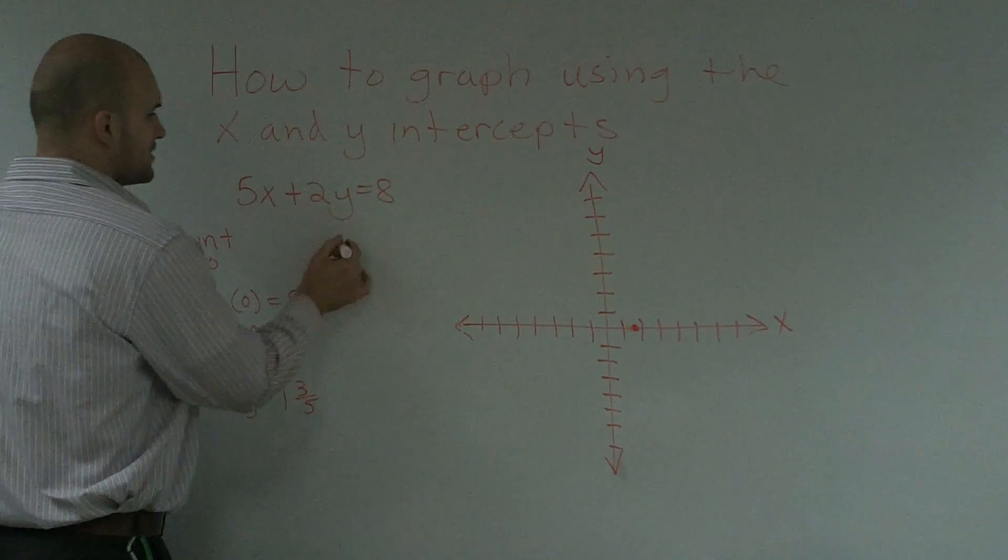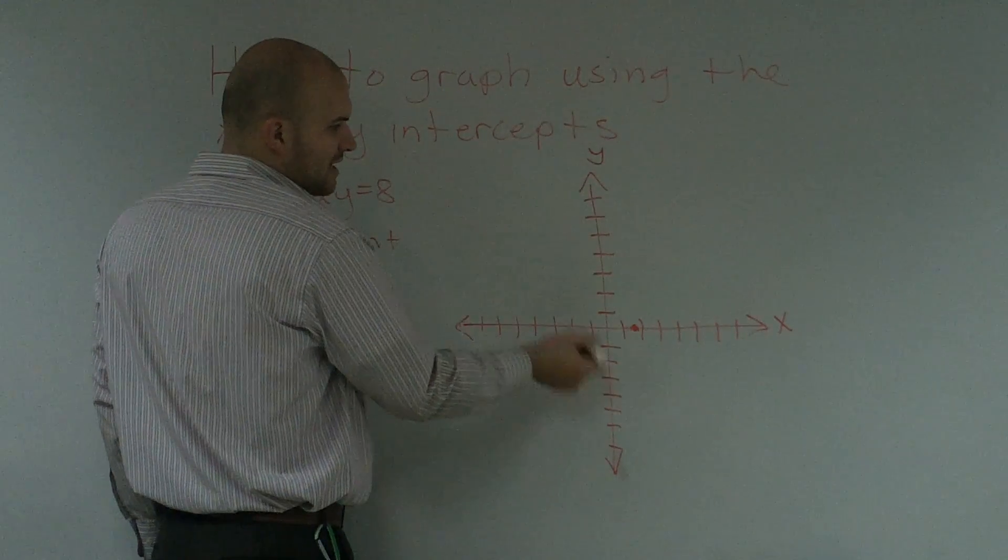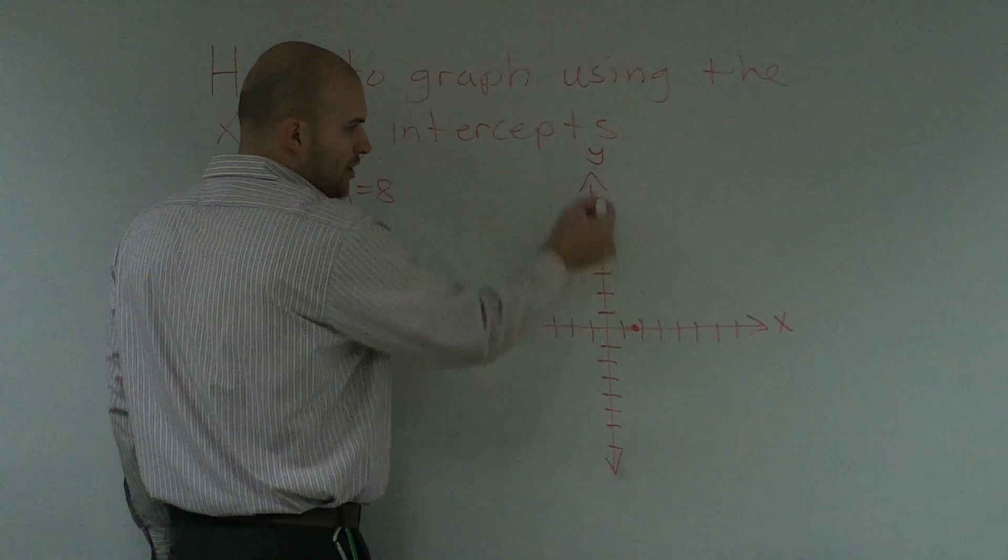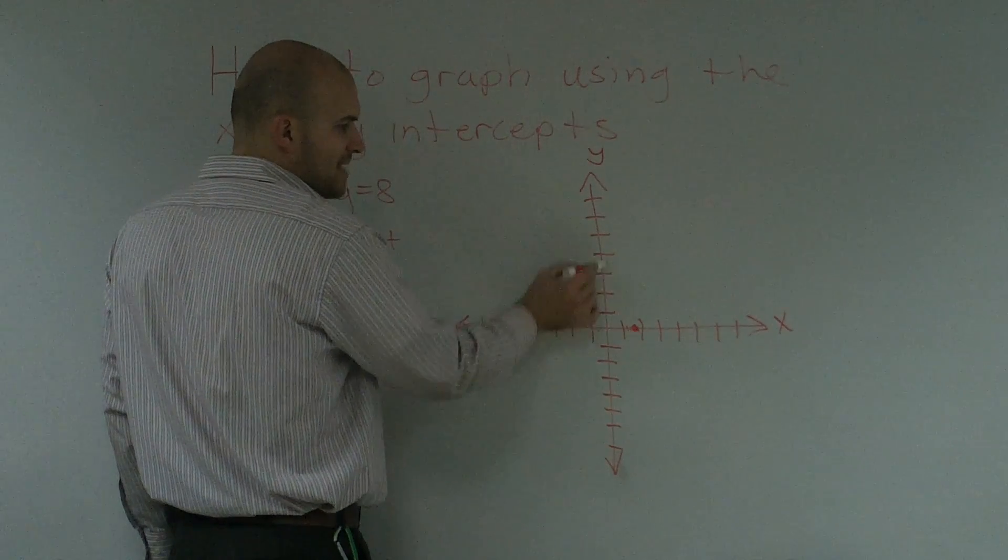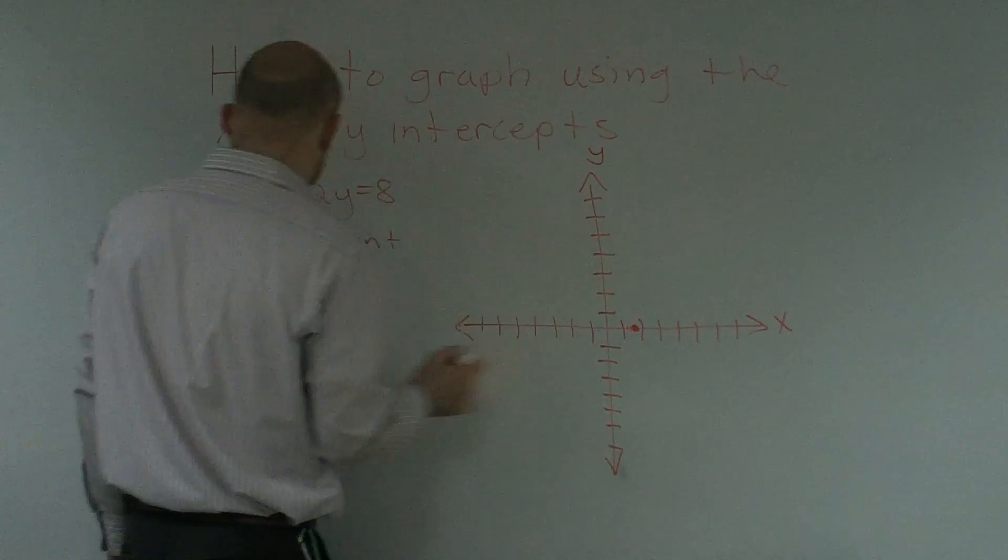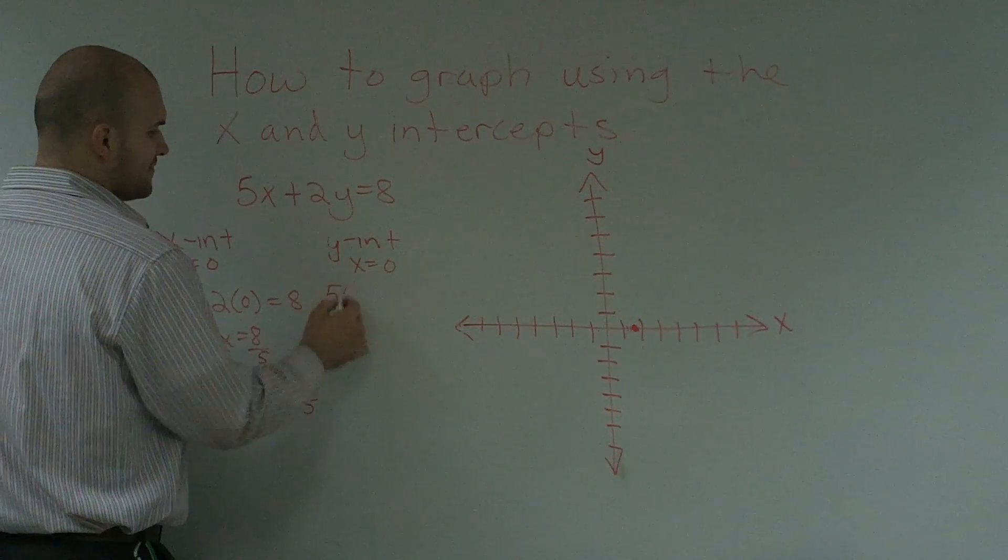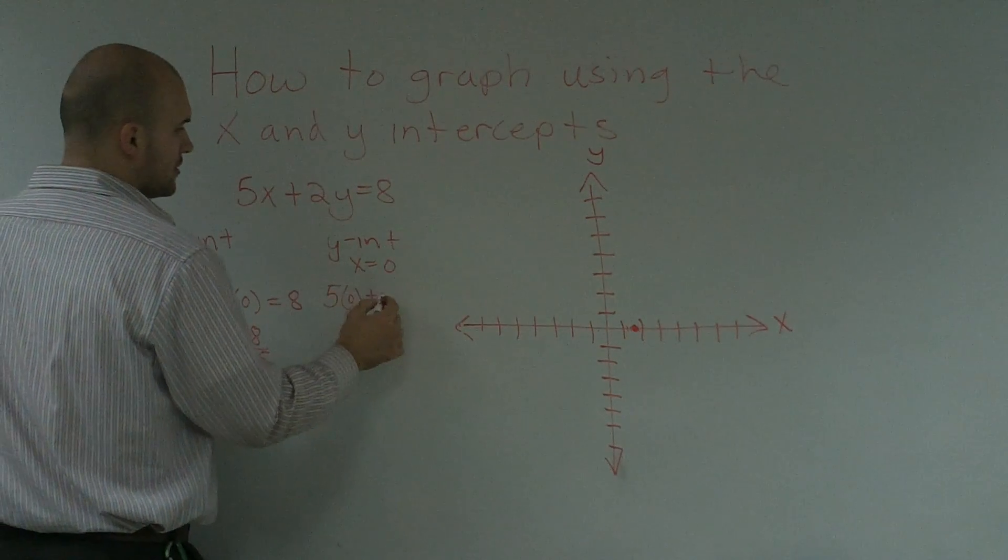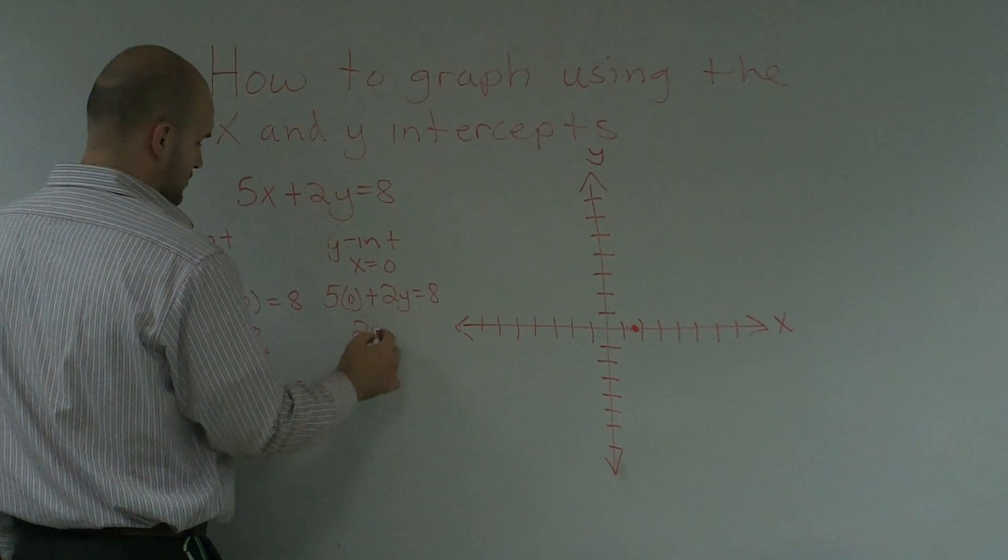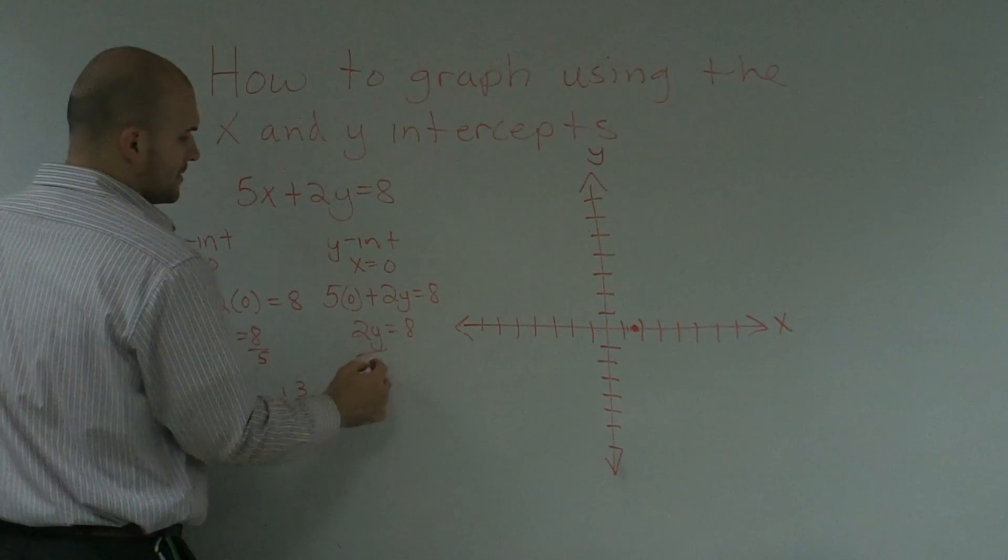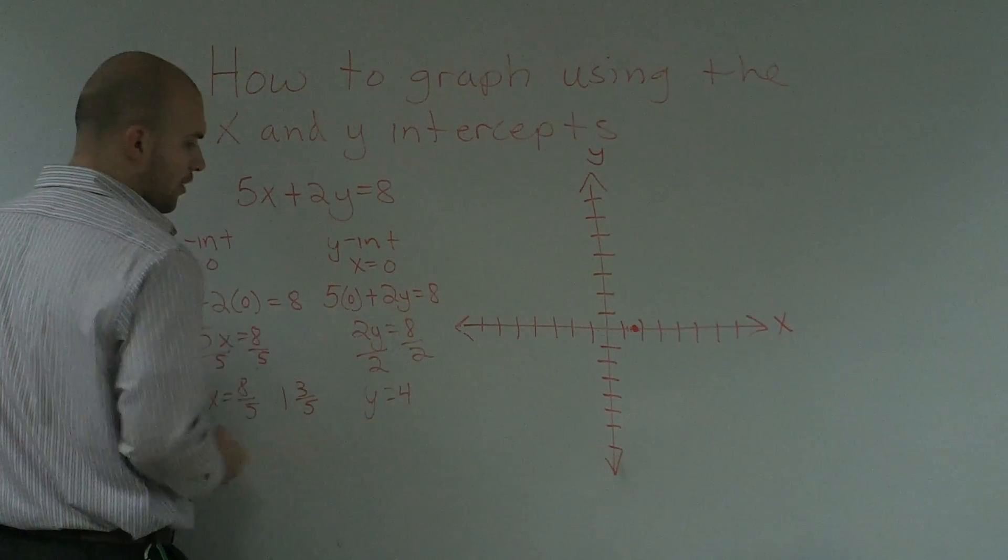Then, to find that y-intercept, so where the line crosses the y-axis, I got to look at my x number line. And I notice that on this number line, my x value is going to be 0 because I'm not going to move left or right on this line. So, therefore, x is going to equal 0. So I have 5 times 0 plus 2y equals 8. Therefore, 2y equals 8. Divide by 2. Y is equal to 4.